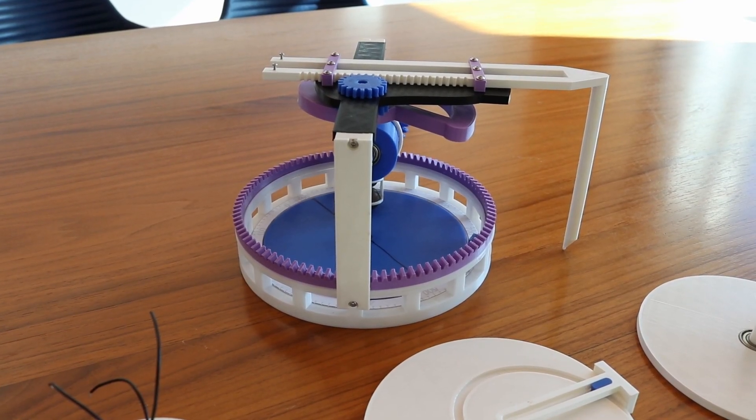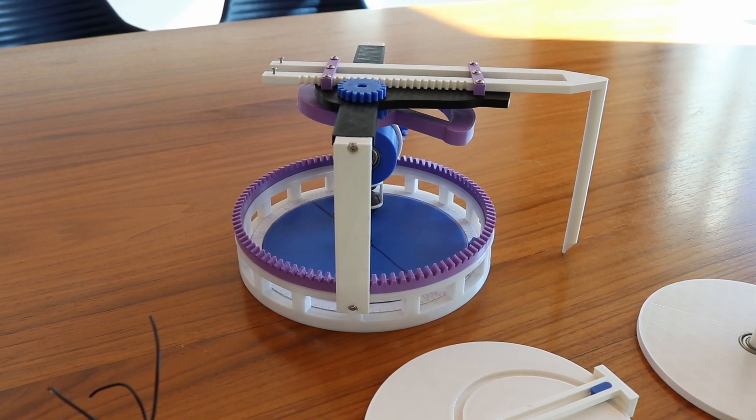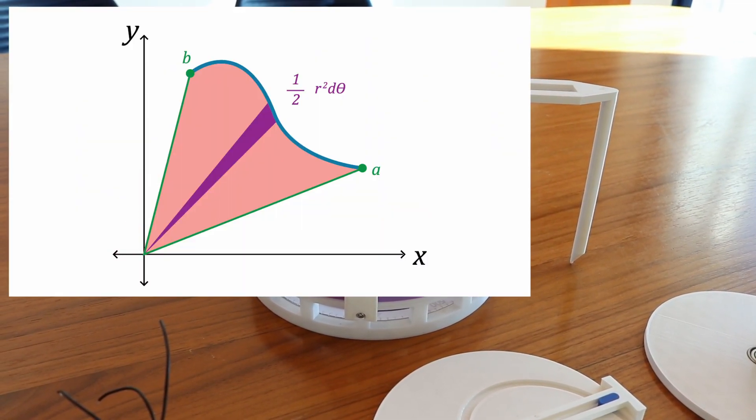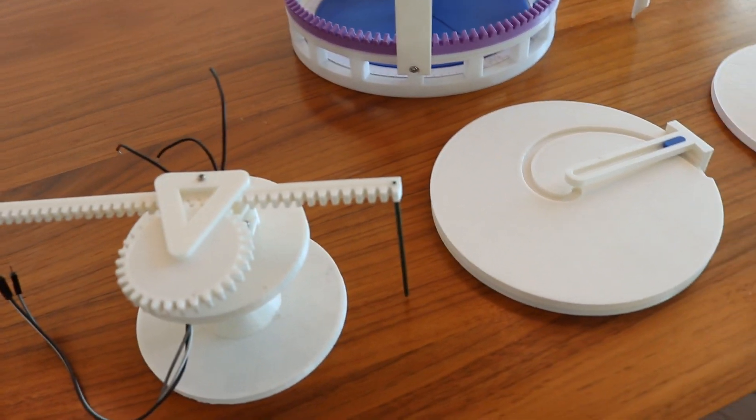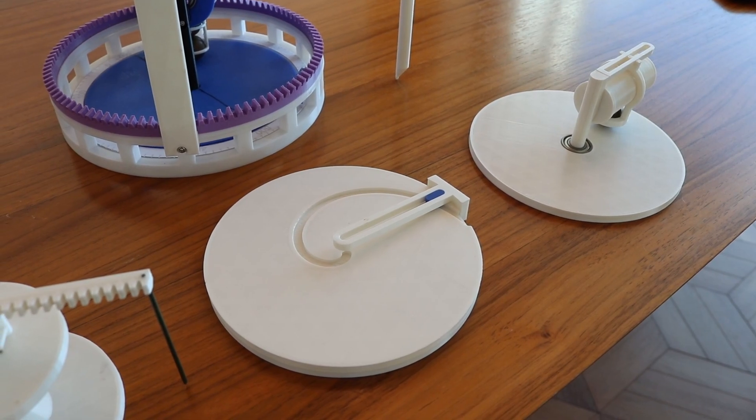The way this mechanism finds area is by using the equation for the area of a polar curve, which is the integral of one-half r squared d theta. These three mechanisms, which are stacked on top of each other, essentially do the three parts of that equation.